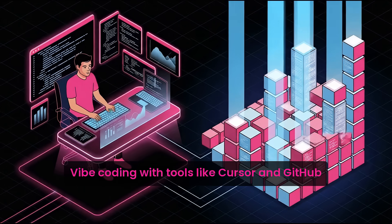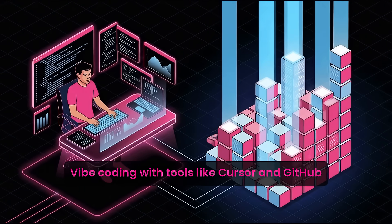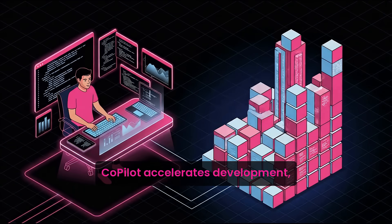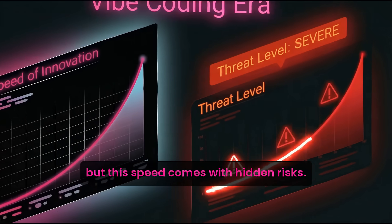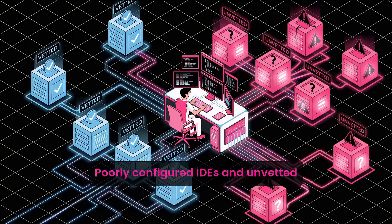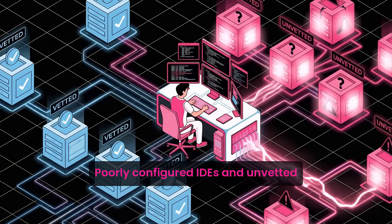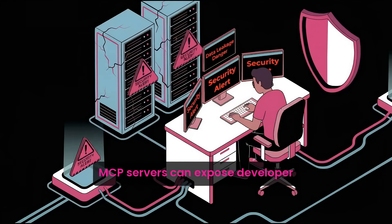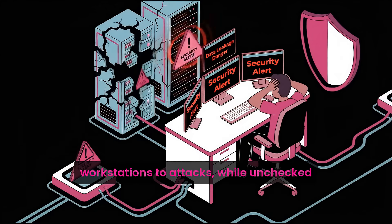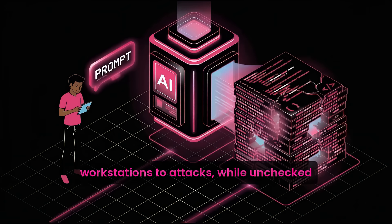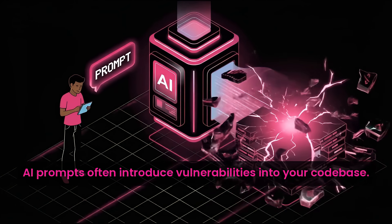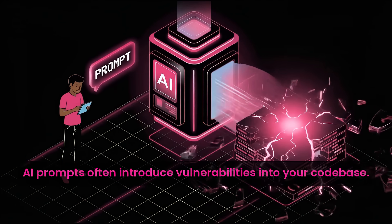Vibe coding with tools like Cursor and GitHub Copilot accelerates development, but this speed comes with hidden risks. Poorly configured IDEs and unvetted MCP servers can expose developer workstations to attacks, while unchecked AI prompts often introduce vulnerabilities into your codebase.